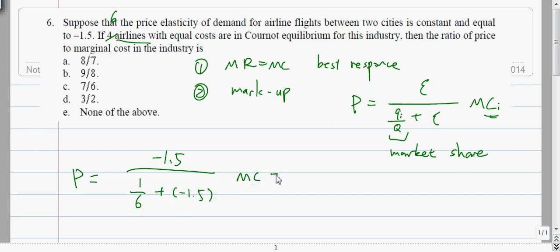So if we multiply top and bottom by six, we get minus nine over one minus nine, which is nine over eight, which is this choice B.